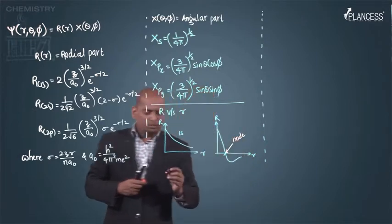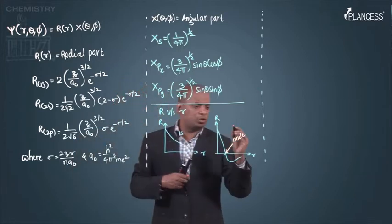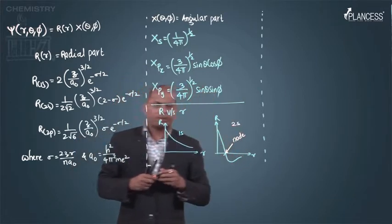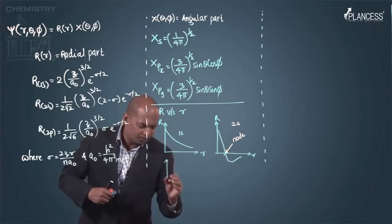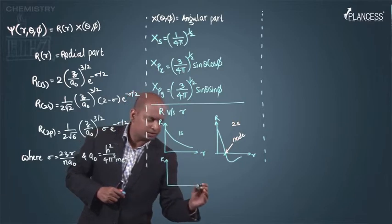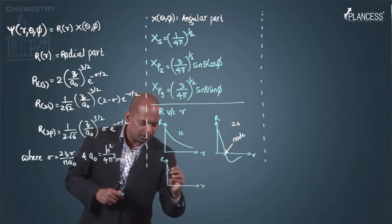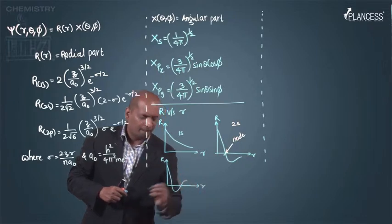Similarly, if we plot a graph for 3s, r versus r, we have a graph like this way.